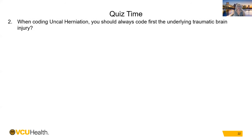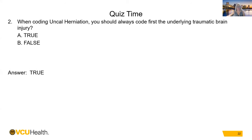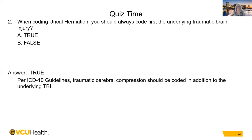Question 2 — When coding uncal herniation, you should always code first the underlying traumatic brain injury. True or false? The answer is true. Per ICD-10 guidelines, traumatic cerebral compression should be coded in addition to the underlying TBI.